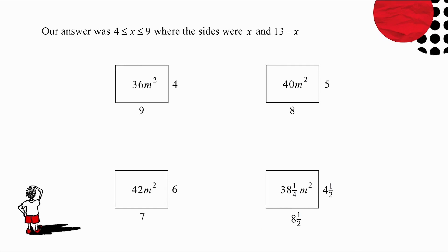Now one good thing in word problems is always to check your answer and see whether it makes sense. Our answer was that x must be greater than or equal to 4, less than or equal to 9. And my sides were x and 13 minus x. So let me take some of the numbers and see how they work. If I take x is 4, my other side is 13 minus 4, which means my area is 36. And the question said I had to have at least 36 meters squared, so 36 is fine.